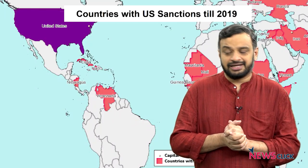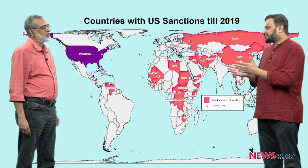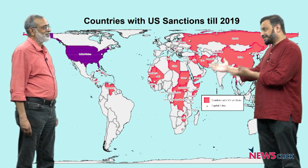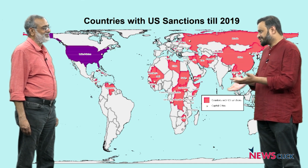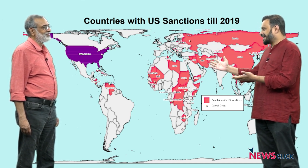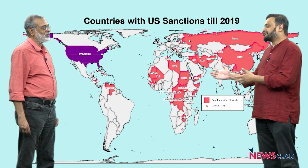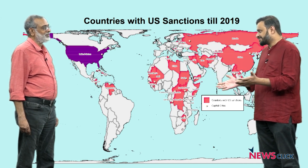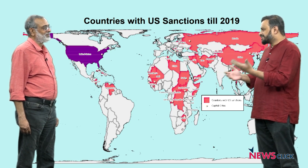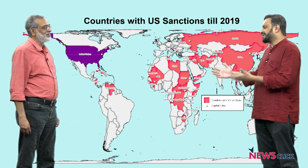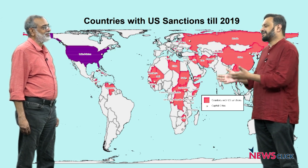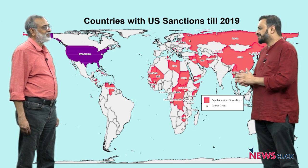We are joined by Prabir Purkayasthan. Let's take a look at this map. These are 2019 numbers, and the numbers may have worsened in these two years. We have nearly 39 countries which are sanctioned by the United States alone for a variety of reasons, a wide variety of sanctions. Could you take us through the very nature of this sanctions regime itself — which countries are affected the most and what is the kind of impact that takes place broadly and specifically in some countries?